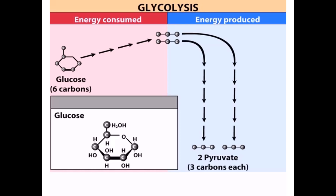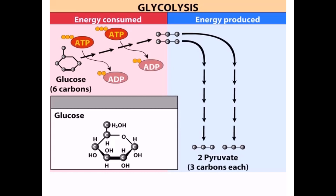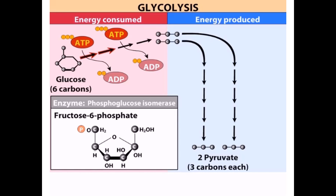The initial reactions in the pathway consume energy, converting ATP to ADP. The enzyme hexokinase uses ATP to phosphorylate glucose, producing glucose 6-phosphate. Glucose 6-phosphate is then rearranged to produce fructose 6-phosphate. The enzyme phosphofructokinase then adds another phosphate group to the molecule, creating fructose 1,6-bisphosphate. These two phosphorylation reactions are irreversible and are important regulatory points in the glycolytic pathway.